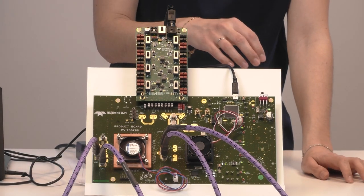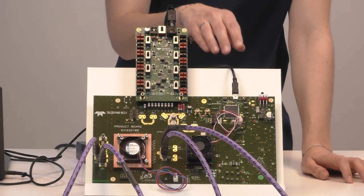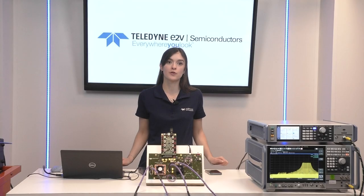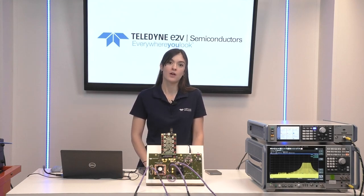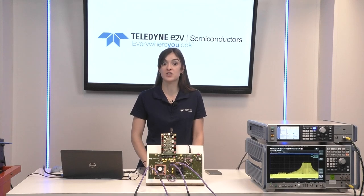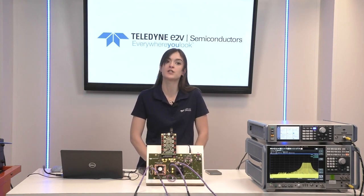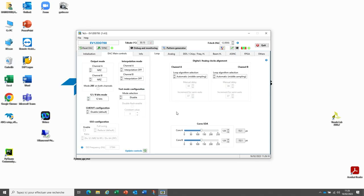Connect the board to the PC using the USB cable, then open the GUI. Now we can start to configure the chirp. In this video, we will perform two configurations: the two DAC outputs in X-band generating chirp, and the other one is one DAC output in C-band and one DAC output in X-band generating chirp.